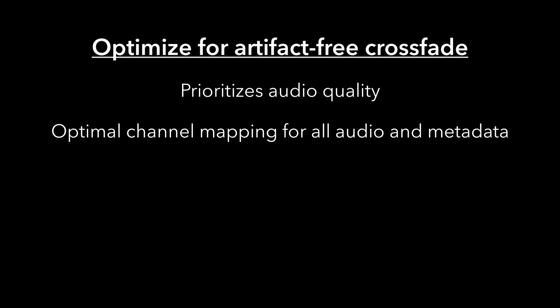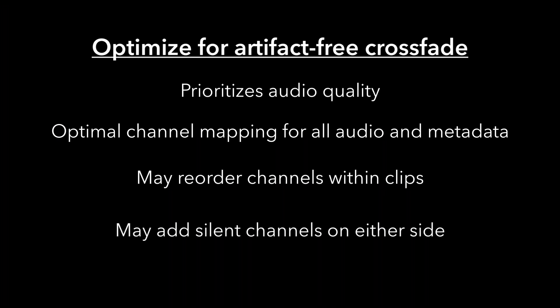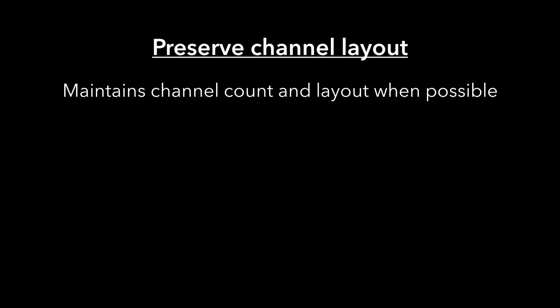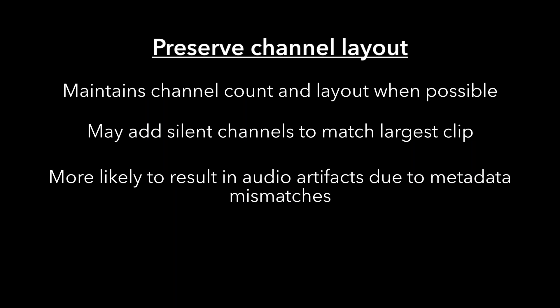Optimize for Artifact Free prioritizes audio quality by finding optimal channel mapping between the two clips, taking into account the audio and metadata of all channels. This may reorder the channels within the clips and may add silent channels on either side of the crossfade. Preserved Channel Layout will maintain the channel count and layout of both clips whenever possible, but may add silent channels to match the largest clip, and is more likely to result in audio artifacts from potential metadata mismatches and transitions.